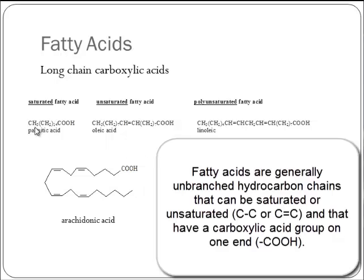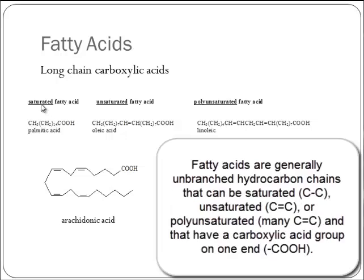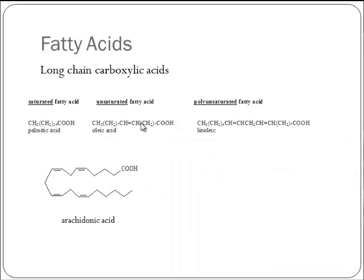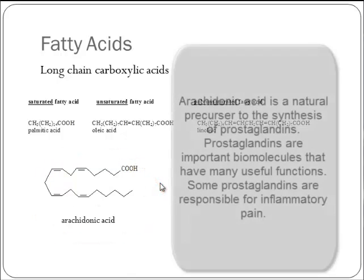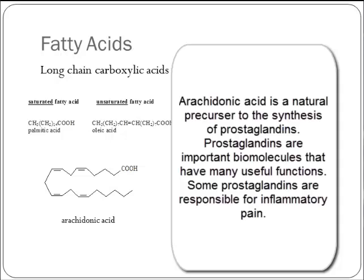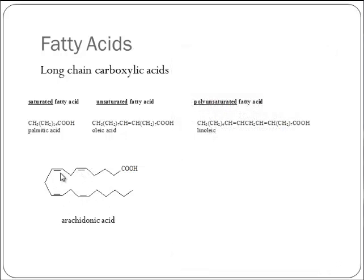If the hydrocarbon chain has all single bonds, it's called a saturated fatty acid. If it has one or so double bonds, it's an unsaturated fatty acid. If it has multiple double bonds throughout the chain, it's called a polyunsaturated fatty acid — the same words used nutritionally. Arachidonic acid is an important carboxylic acid; it's part of the mechanism by which your body makes prostaglandins — useful ones and even the ones that eventually cause inflammatory pain. It's a polyunsaturated carboxylic acid with specifically four double bonds.